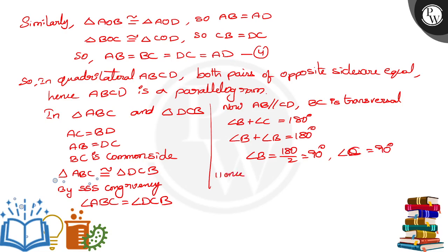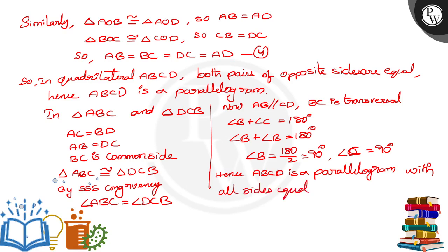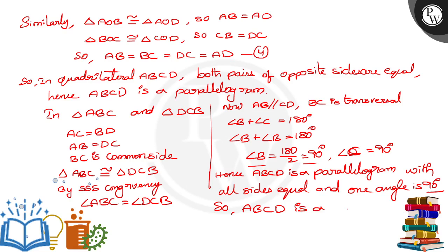Hence ABCD is a parallelogram with all sides equal and one angle equal to 90 degrees. Therefore ABCD is a square. The main important things we proved are: all sides are equal and at least one angle is 90 degrees, so the given quadrilateral is nothing but a square. Thank you.